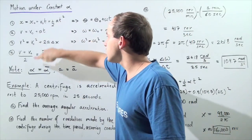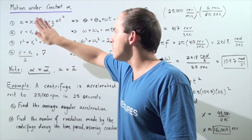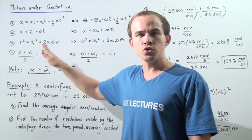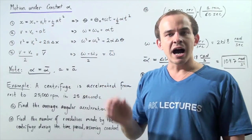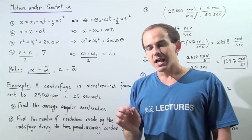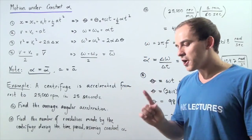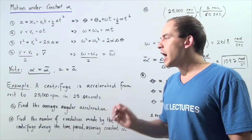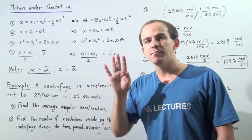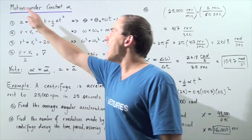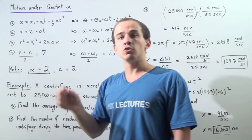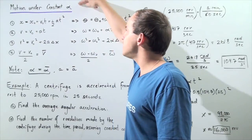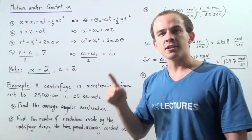Here we have a list of the four kinematics equations for translational motion under constant linear acceleration. In a very analogous way, we can also derive four kinematics equations for angular or rotational motion under constant angular acceleration.